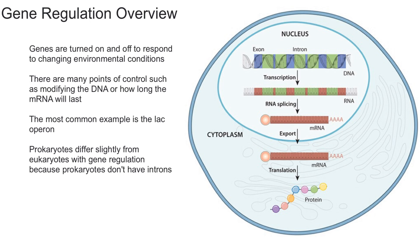Then the mRNA is going to be translated into a polypeptide or protein. As you can imagine, there are many ways to control how much protein you have — you could control it in the beginning or somewhere in the middle. There are many points of control, but you can modify the DNA. There are ways to silence certain parts of the DNA to make sure that part doesn't get turned into protein.